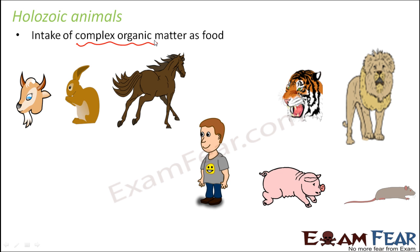But when we eat food — whether a glass of juice, an omelette, or a bowl of rice — it first needs to be chewed, then goes inside our body and is broken down into the simplest form. So many processes happen because the food we eat is complex food.